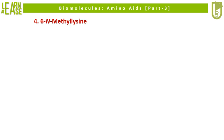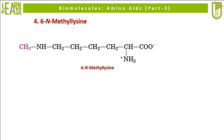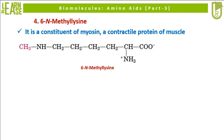The next uncommon amino acid is 6-N-methyllysine; its structure is shown here. 6-N-methyllysine is a constituent of myosin, which is a contractile protein of muscle tissue.